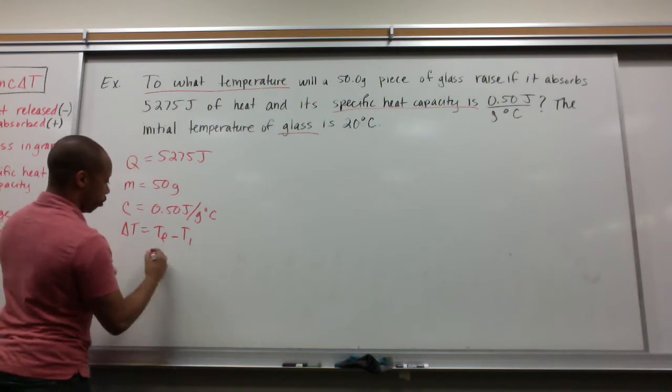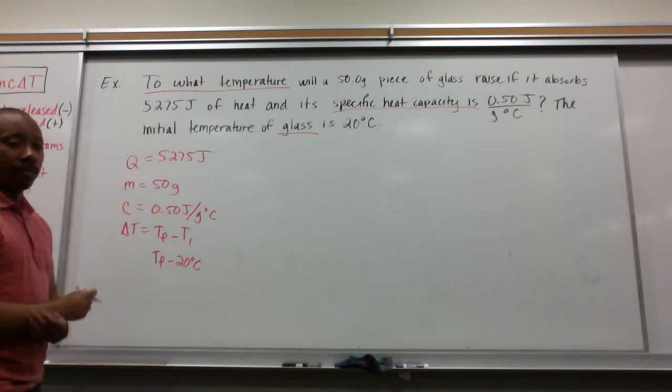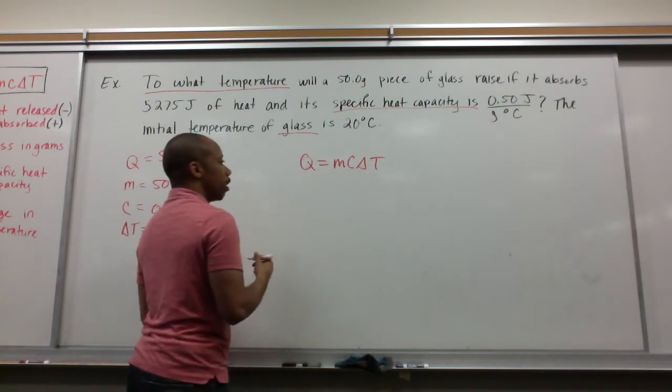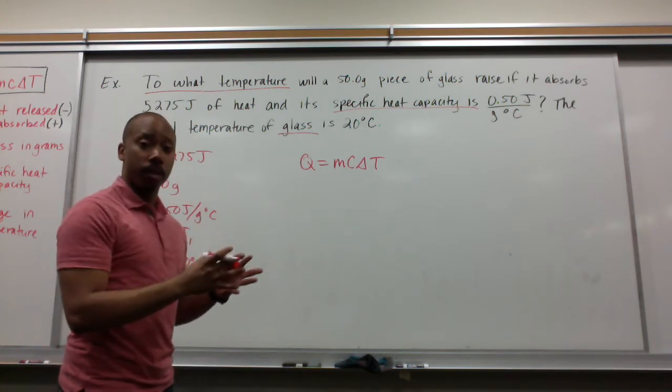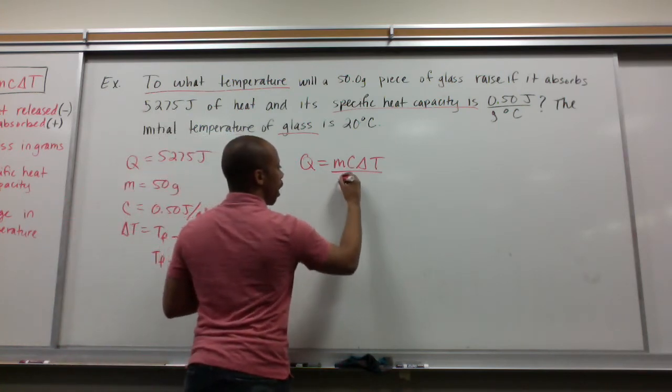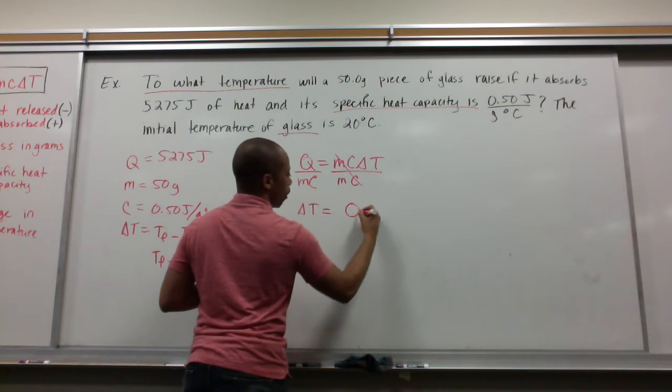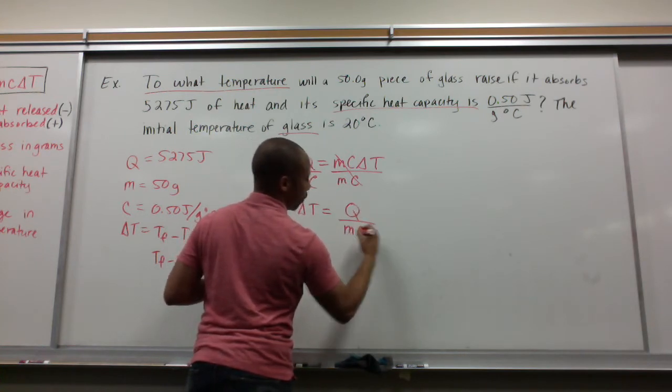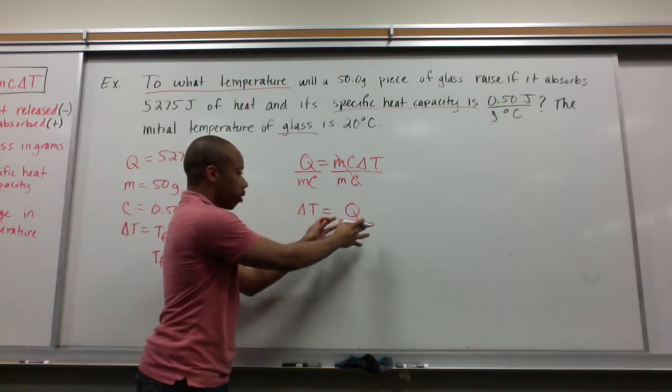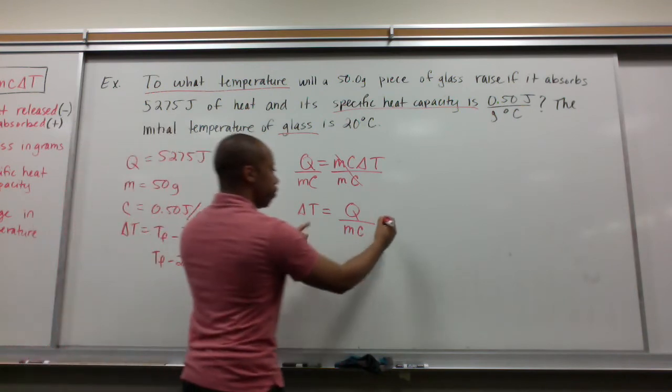The specific heat is 0.50 joules per gram degree Celsius. Delta T. Now, delta T, we know that this is T final minus T initial. We have T initial. We don't have T final. So, we have to find Tf. Our equation, Q equals MC delta T. I'm going to rearrange here before I put numbers in. Let's rearrange and solve for delta T by itself. So, I solve for delta T, and I want to divide both sides by MC. So, delta T is equal to heat over the mass times the specific heat.